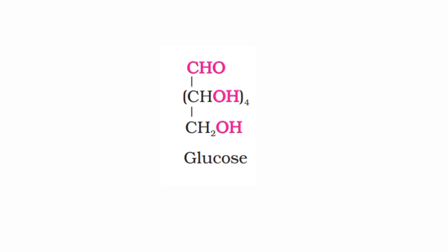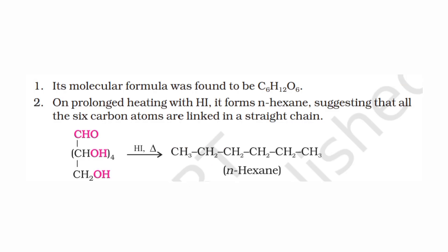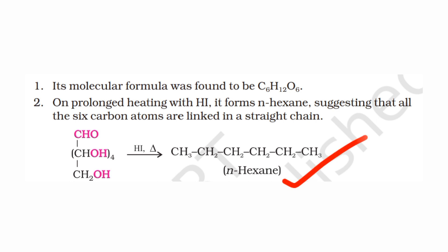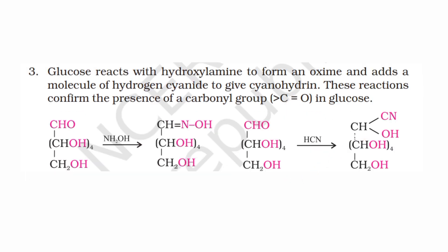Glucose is also known as dextrose. Its molecular formula is C6H12O6. The structure has a CHO group, which is the aldehyde functional group. Glucose is the monomer of larger carbohydrates like starch and cellulose. Glucose has a straight-chain structure with a carbonyl group.